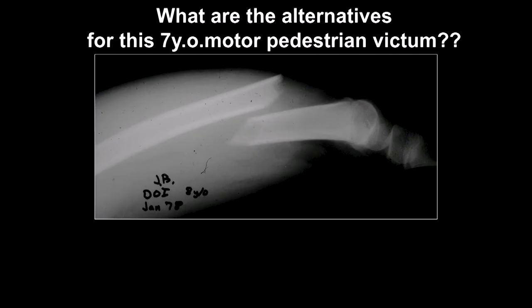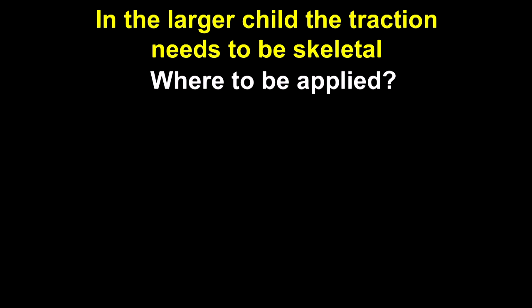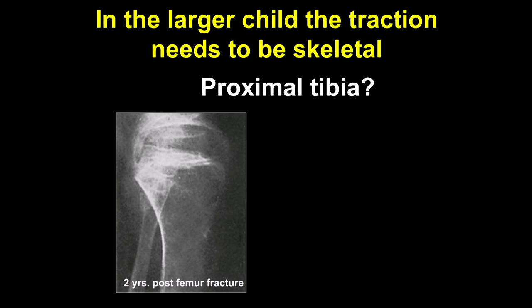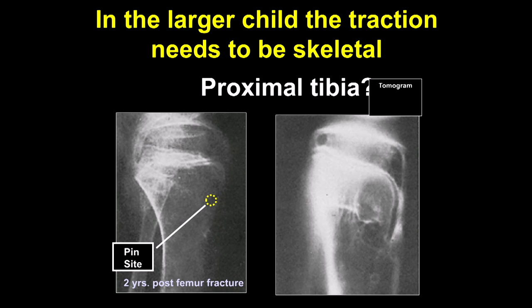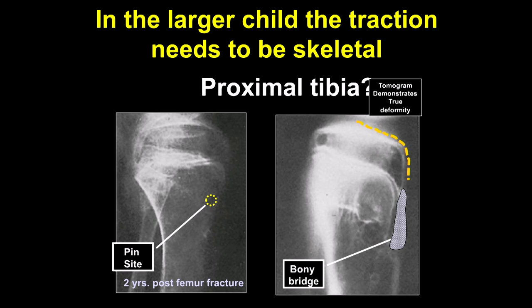What are the alternatives? This is a seven-year-old motor-pedestrian victim with too much shortening for immediate spica and skin that probably wouldn't tolerate Russell's traction. If you're going to apply traction in this age group, you have to use skeletal traction—the skin won't tolerate skin traction. Where do you put the pin? You can put it in the distal femur. What's wrong with the proximal tibia? The tibial tubercle physis might close. Here's one case two years post-femur fracture where you can demonstrate on tomogram there was a deformity—a growth plate that's slowed down—and now a bony bridge. So you can't use a tibial pin.